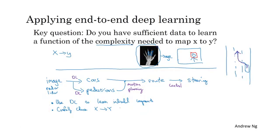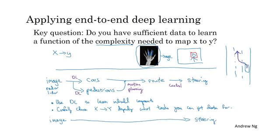And in contrast, it is exciting to talk about a pure end-to-end deep learning approach, where you input an image and directly output a steering. But given data availability and the types of things we can learn with neural networks today, this is actually not the most promising approach. Or this is not an approach that I think teams have gotten to work best. And I think this is actually, this pure end-to-end deep learning approach is actually less promising than more sophisticated approaches like this, given the availability of data and our ability to train neural networks today.